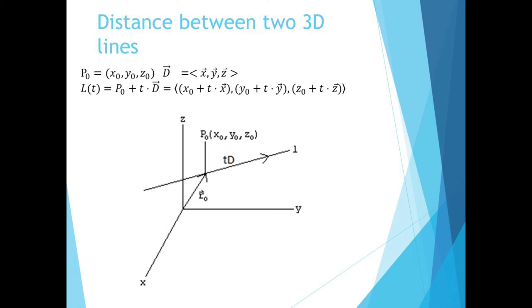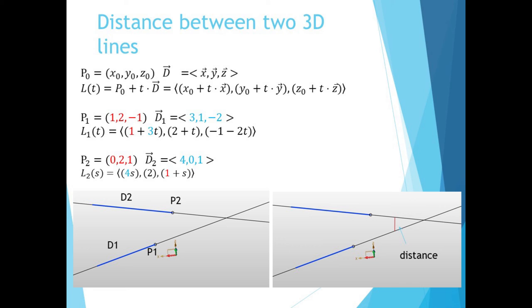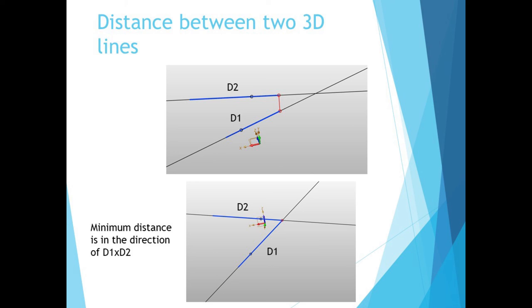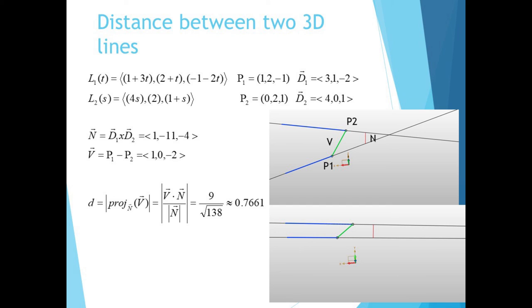As a final example, let's find the distance between two 3D lines. Lines are usually specified in 3D parametrically. Given a point P and a vector D pointing in the direction of the line, the line has the equation L(T) equals P plus T times D, where T is our parameter. Suppose we have the line going through 1, 2, negative 1 in the direction 3, 1, negative 2, and the line going through 0, 2, 1 going in the direction 4, 0, 1. The lines do not intersect in 3D, but we can find the shortest distance between them. The segment connecting our two closest points must be perpendicular to both lines — perpendicular to both direction vectors — and hence must be in the direction D1 cross D2, which is 1, negative 11, negative 4. So let's call this vector n.